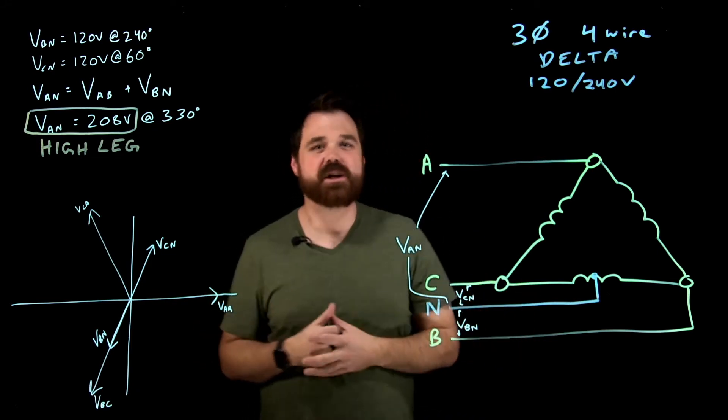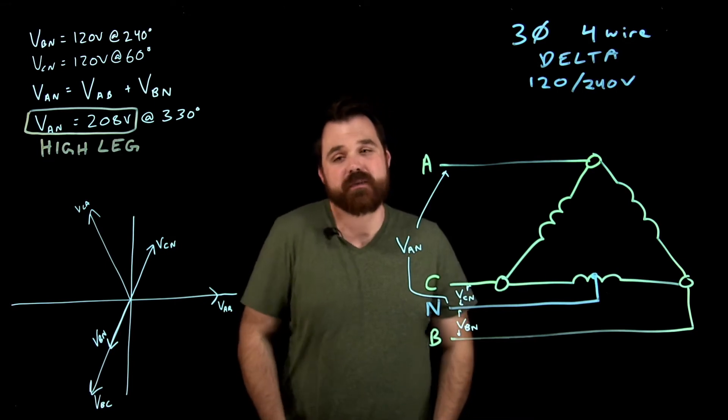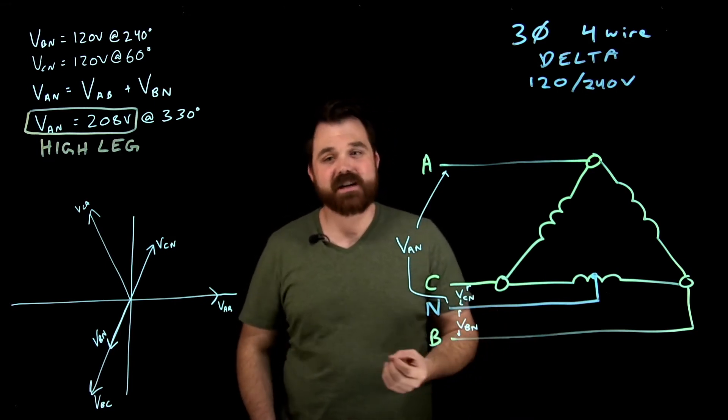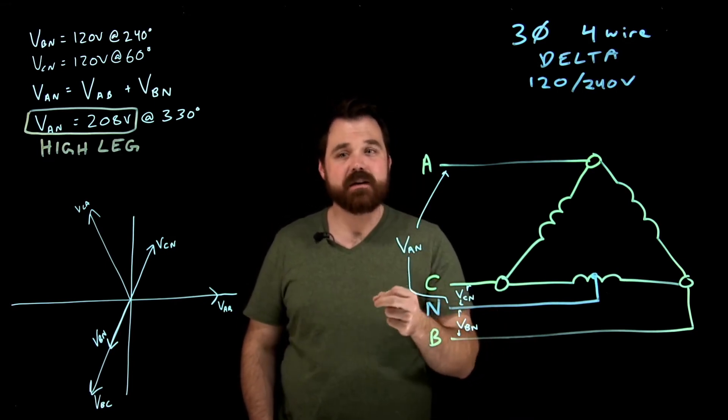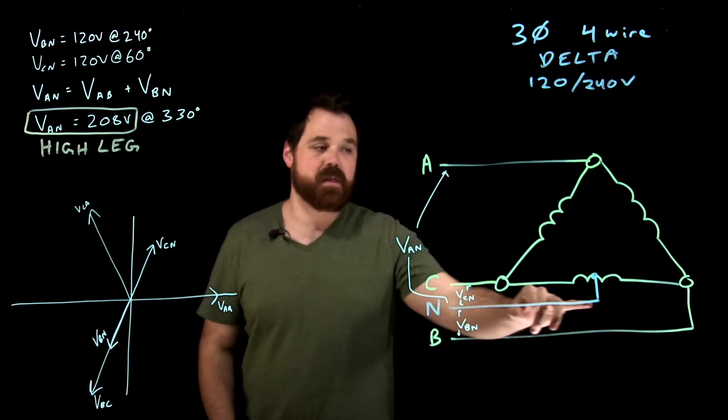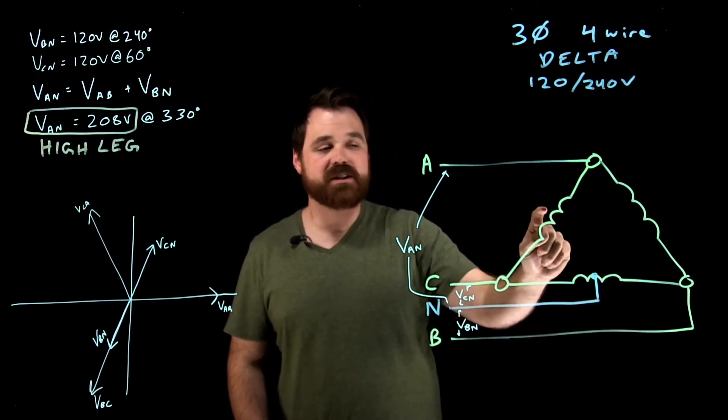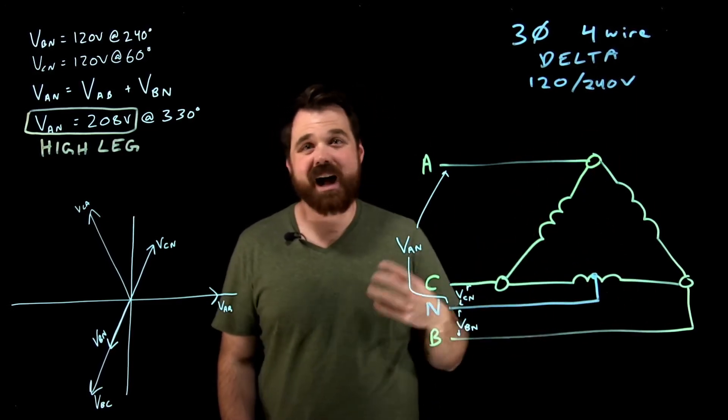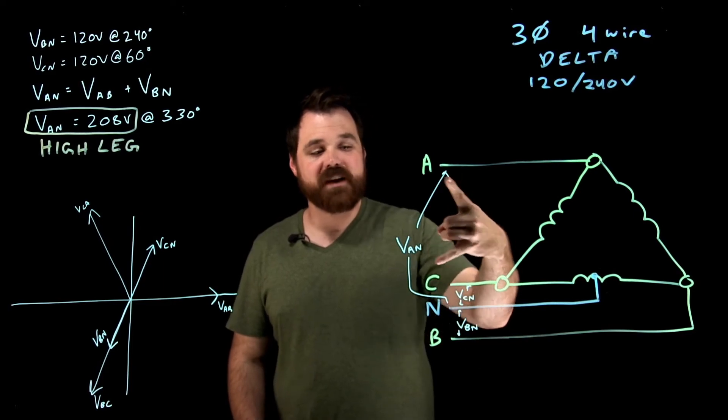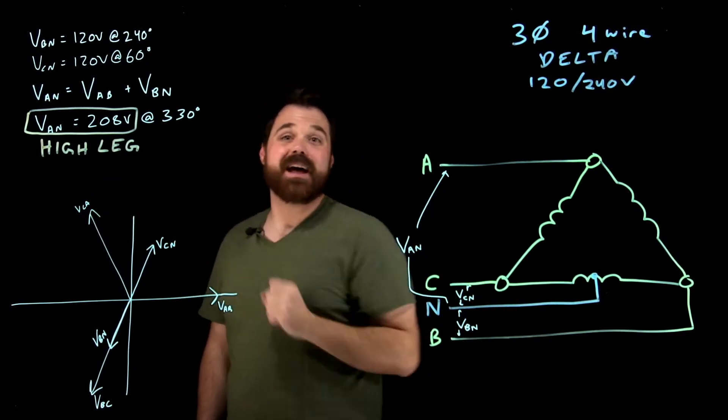So now there's some rules in the code book, which I'll post below in the description so you can reference them yourself. What it tells us is that phase A is to be the phase with the high voltage to ground. Meaning I have to center tap phase B down here. I can't center tap C because then A would not be the high voltage to ground. So phase A has to be that high leg.